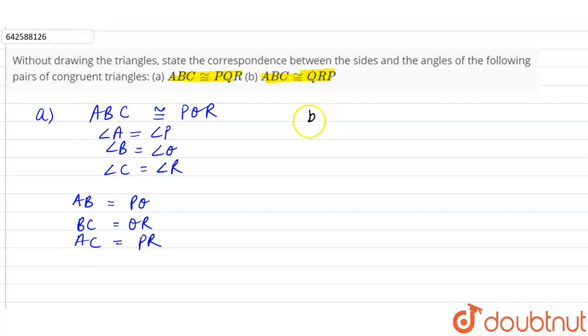Now, if we talk about part B of the question, ABC is congruent to QRP. So, corresponding sides and angles. Firstly, angles, angle A is equal to angle Q, angle B is equal to angle R, and angle C is equal to angle P.